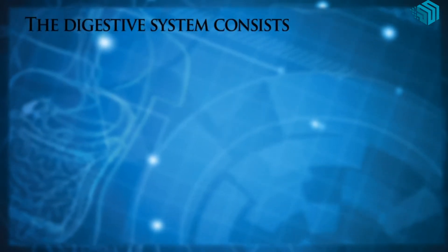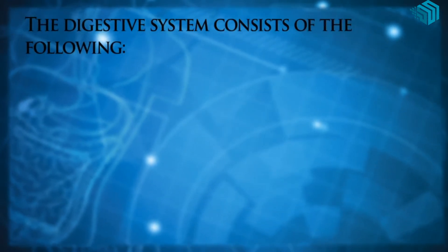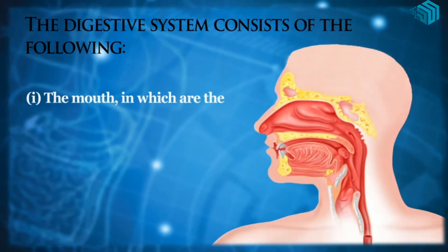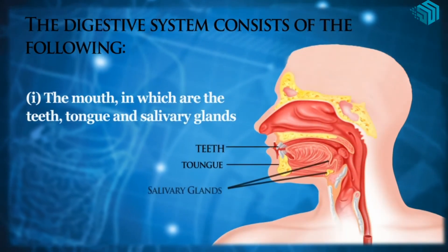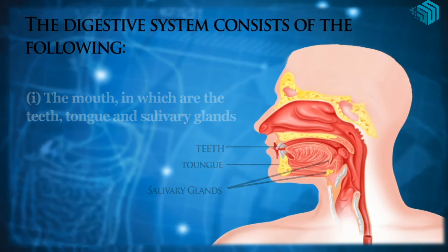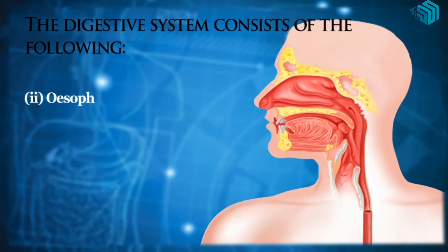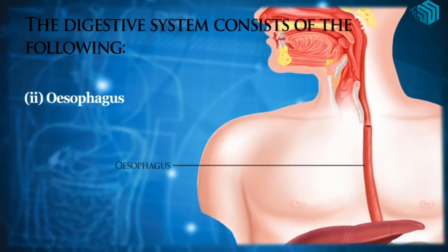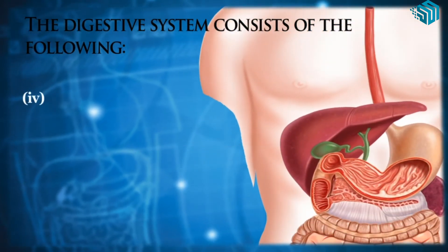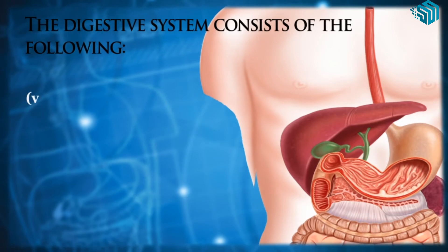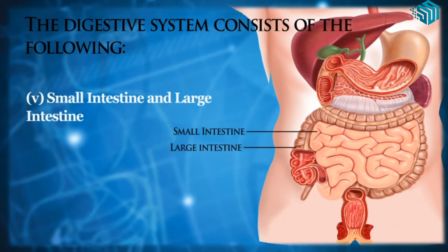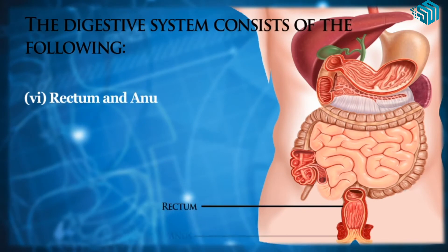The digestive system consists of the following: the mouth, in which are the teeth, tongue and salivary glands; the esophagus; liver; pancreas; small intestine and large intestine; rectum and anus.